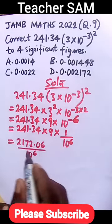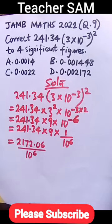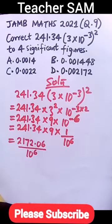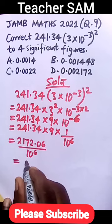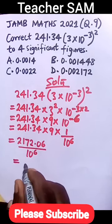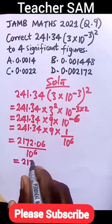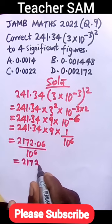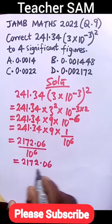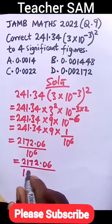10^6 is the same as 1 million, so you have 2172.06 divided by 1 million.